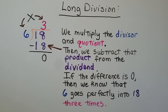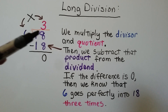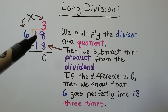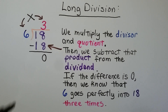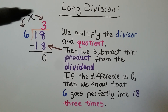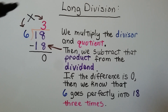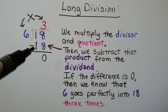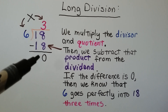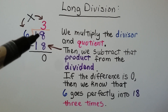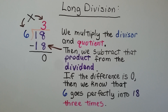There's a type of division called long division and it uses this division bracket. We do 18 divided by 6 and we get the answer 3. We can multiply the divisor 6 and the quotient 3 together. 6 times 3 is 18. We subtract that product, 18, from the dividend. If the difference is 0, then we know 6 goes perfectly into 18 three times. We're going to learn more about long division when we get into 4th grade.